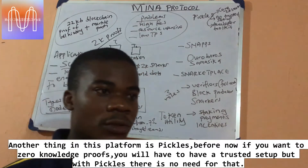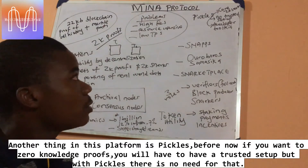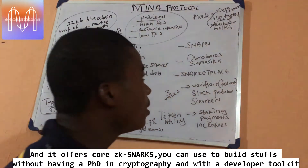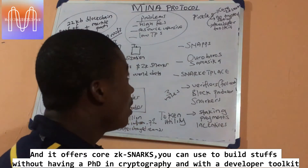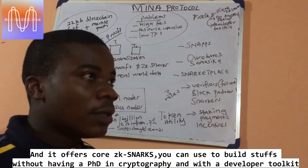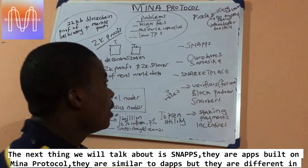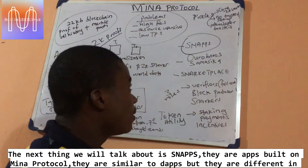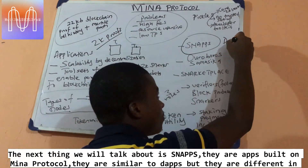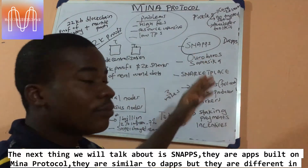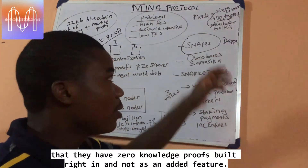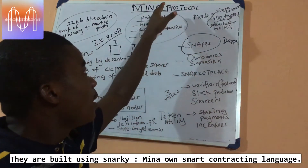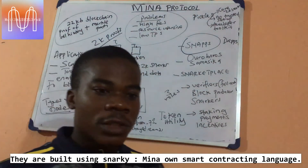Another feature on this platform is called Pickles. Before now, if you wanted to do zero-knowledge proofs you had to have a trusted setup. With Pickles there is no need for that trusted setup, and it offers universal ZK Snapps that anybody can use to build things without having a PhD in cryptography. There is also a developer toolkit to implement all of this. Snapps are applications similar to Ethereum dApps, but they have zero-knowledge proof properties built in natively — not as add-ons. These are special applications built on the Mina Protocol using a dedicated language.